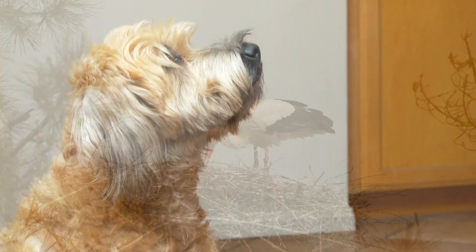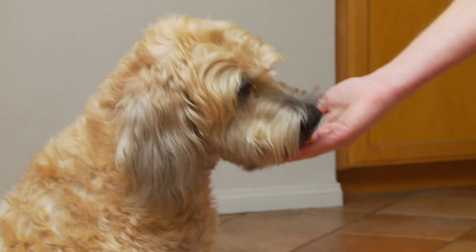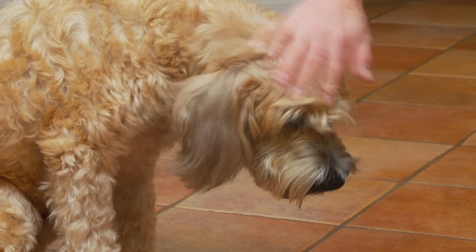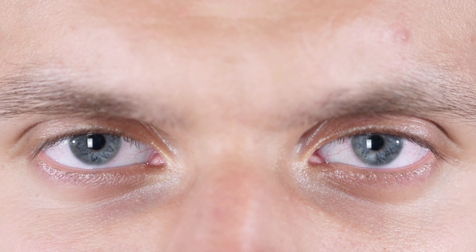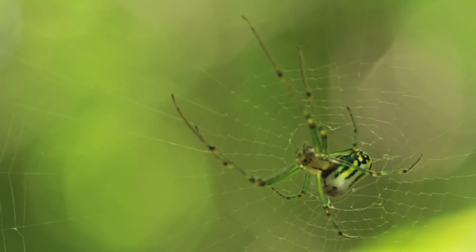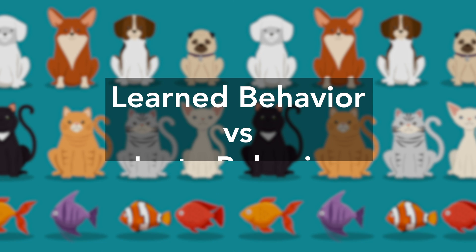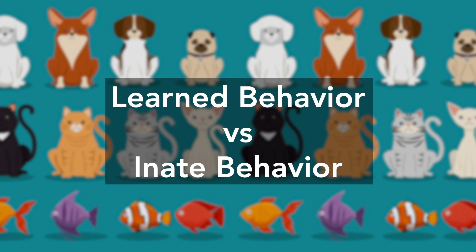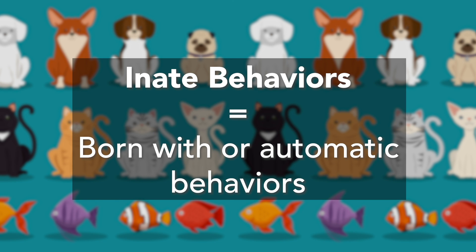Dogs sit or roll over because they may get a treat or a pat on their heads for doing those tricks. People blink to moisten or protect their eyes, and spiders build webs to catch their prey and for protection. Some behavior is learned and some behavior is innate.